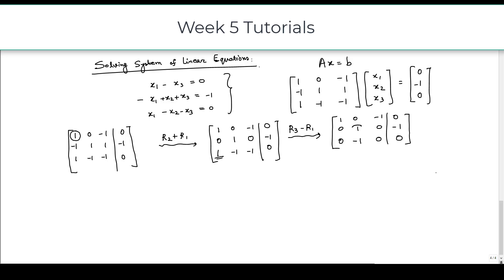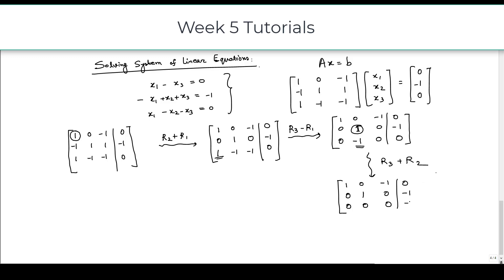Now the pivot element in the second row is in the second column and it is already 1, so we do not need to scale it. We have to make the element below it to be 0, so we add R2 to R3. The first two rows remain the same, and the third row becomes 0, 0, 0, minus 1.